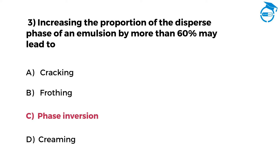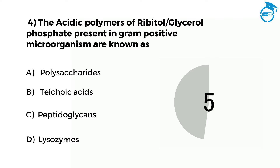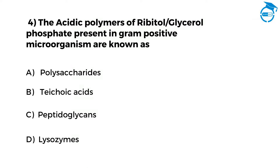I hope you are ready to take the next question. Acidic polymers of ribitol or glycerol phosphate present in gram-positive microorganisms are known as — option A polysaccharides, option B teichoic acids, option C peptidoglycans, option D lysozymes. Mention your answer in the comments. The right option is B, that is teichoic acids.